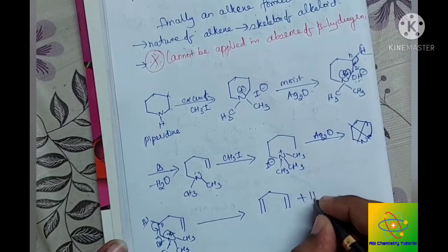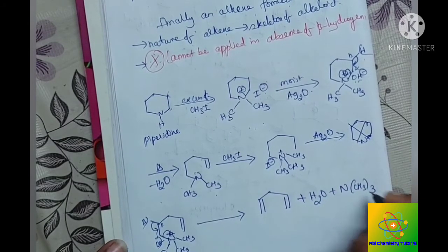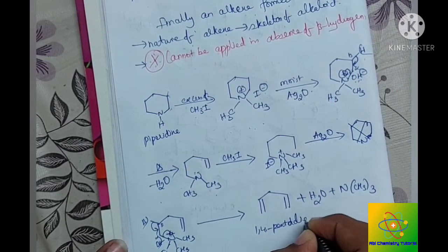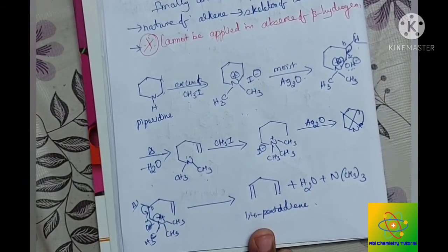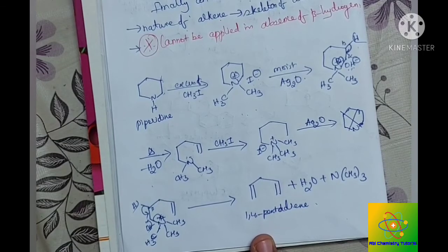Finally, one water molecule and NCH3 thrice. This is 1,4-pentadiene. Here finally we get an alkene and this alkene is used to determine the structure or the skeleton of the alkaloid we took or the alkaloid under study.